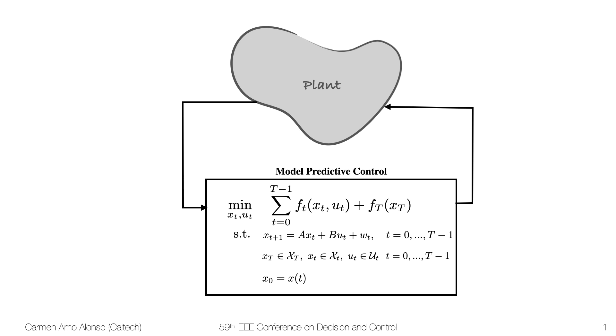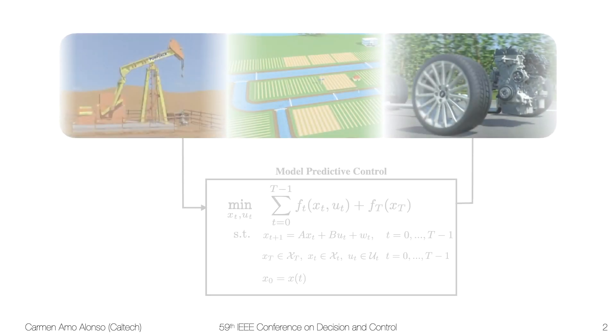We're restricting ourselves to linear systems, but we're not making any assumptions on the functions and sets other than they are convex. Model predictive control works by measuring the state of the plant and using that as the initial condition. We compute a sequence of inputs but only apply the first one. This has proven very effective for many industrial applications.